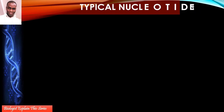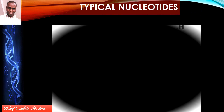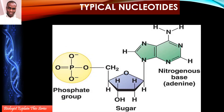This slide shows the structure of a typical nucleotide — how the three components, the phosphate, the sugar, and the bases, are joined together to form a nucleotide, which is a monomer. Nucleotides are the monomers or building blocks with which nucleic acids are formed.